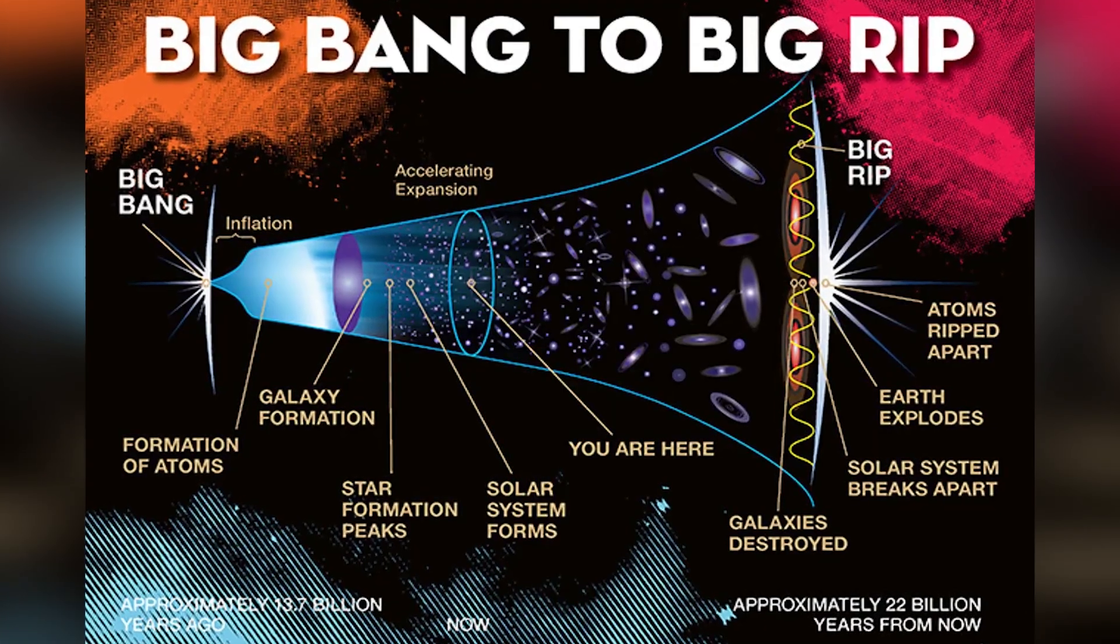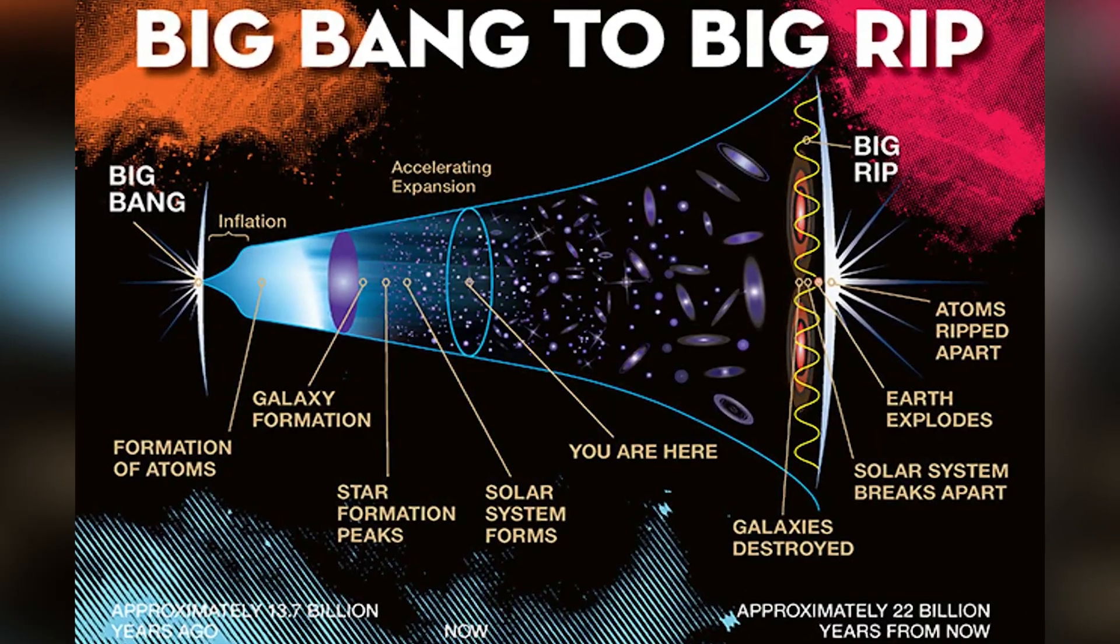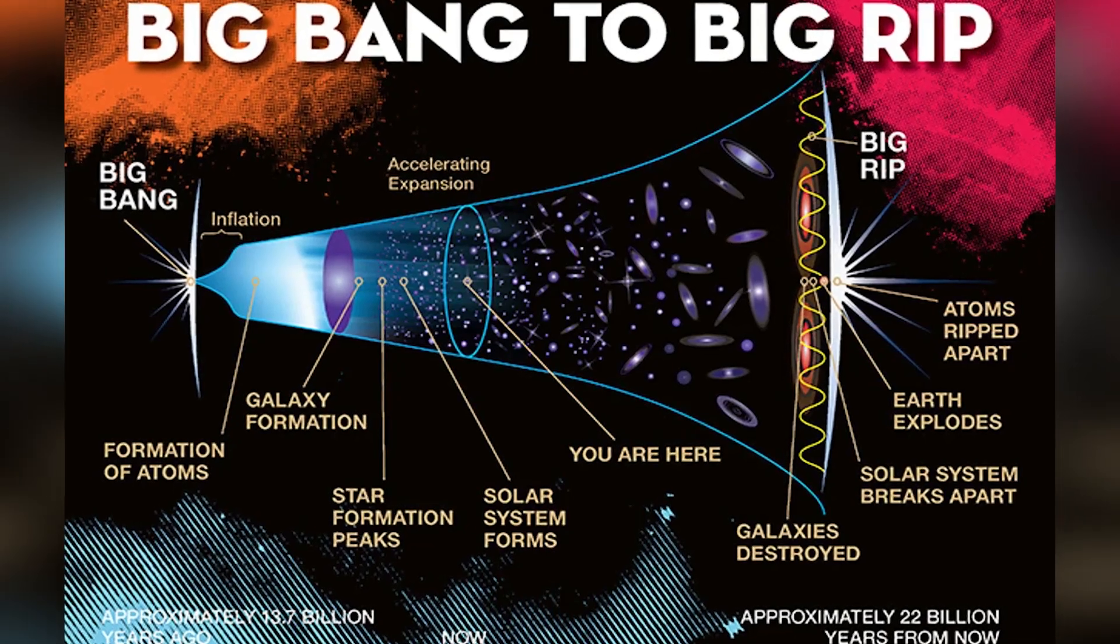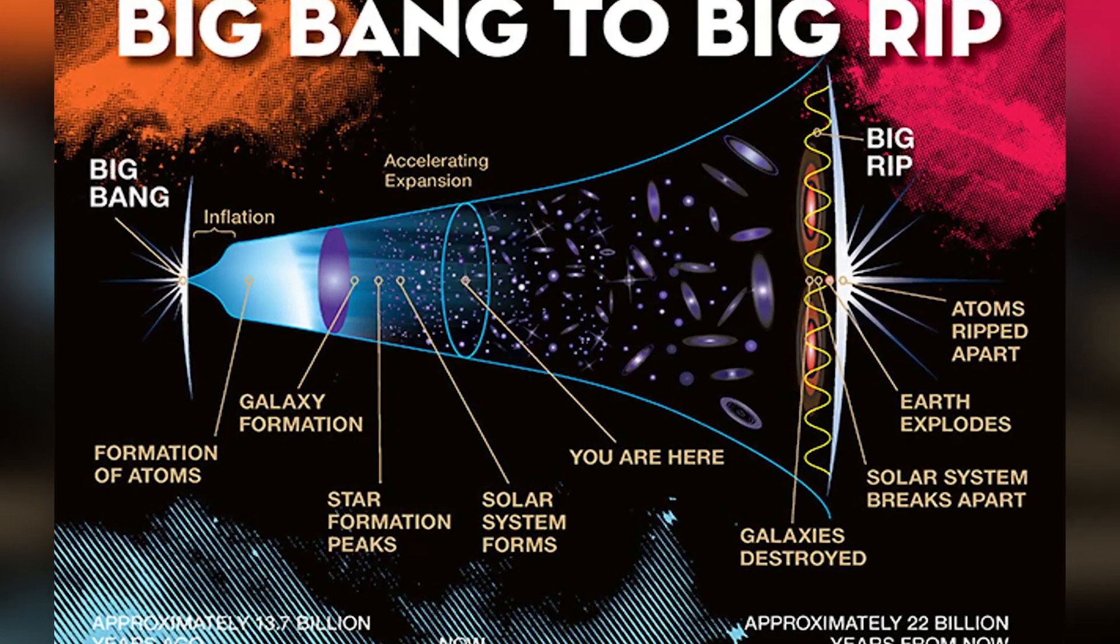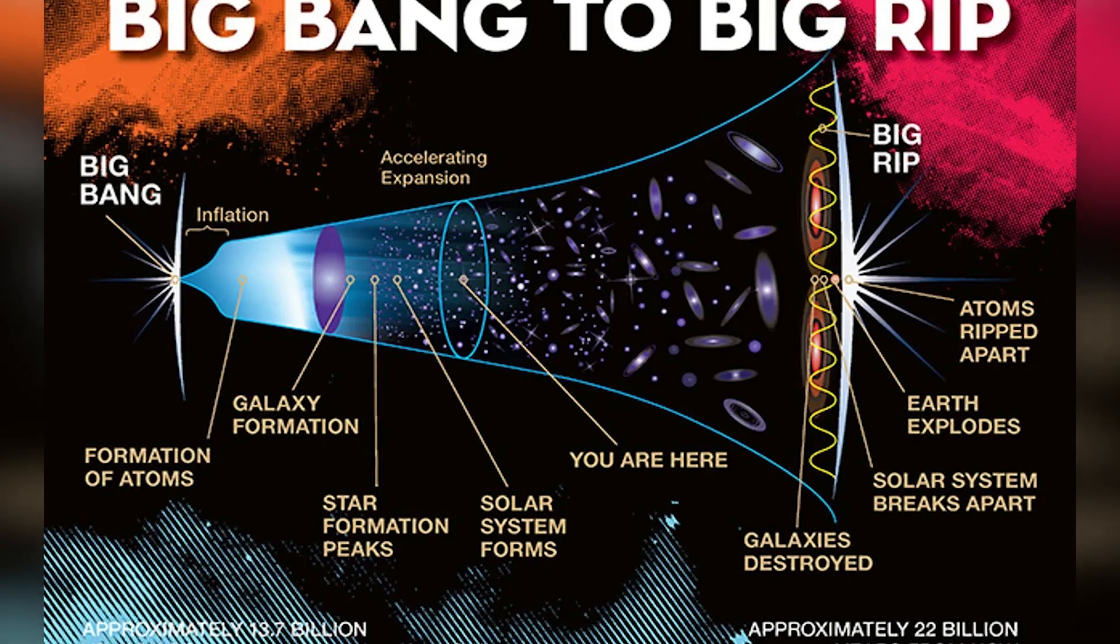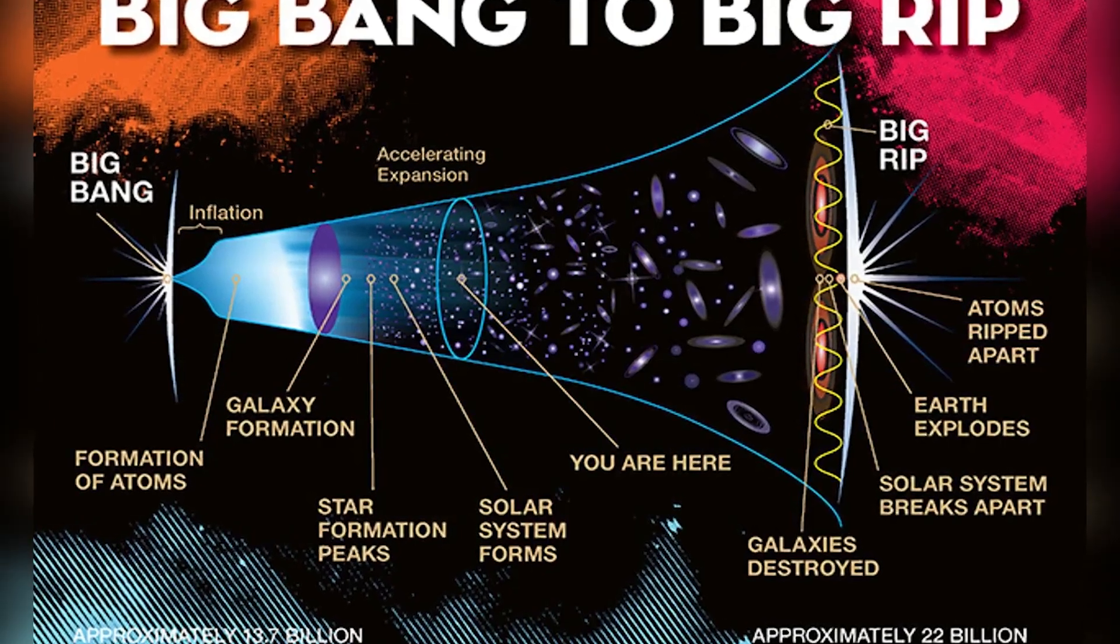There's another way things might end, and it's called the Big Rip. This idea says if the universe keeps getting bigger fast, things might go wrong in about 200 billion years. It could get so speedy that gravity won't work anymore. Planets could lose their paths around stars.